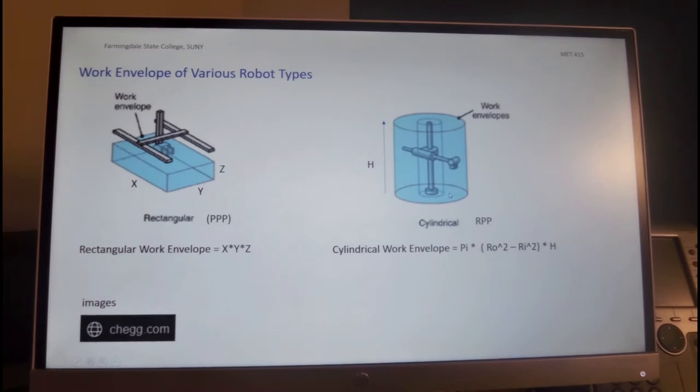So the cylindrical work envelope will be pi times RO, which is the outside diameter, will provide the surface area of the outer diameter. If we multiply that by H, we'll get the volume of the outer diameter. And since the robot cannot reach the inner portion of the cylinder, we have to subtract the volume of the inner cylinder, which is pi times RI squared times H.